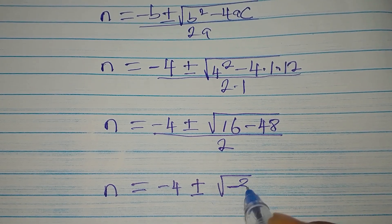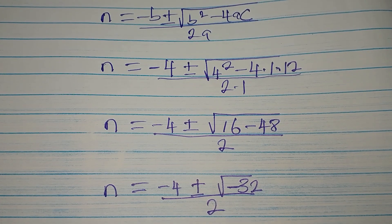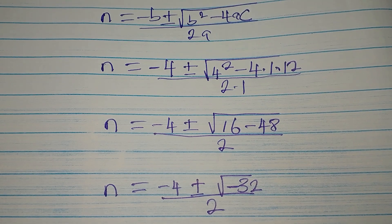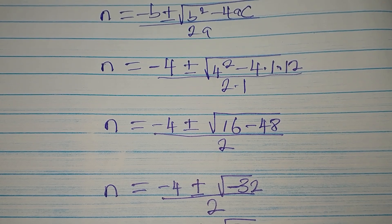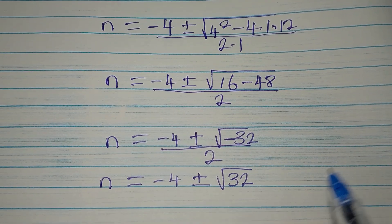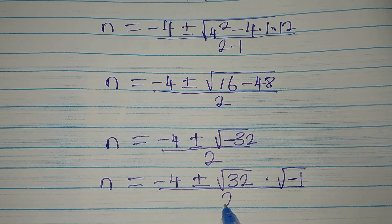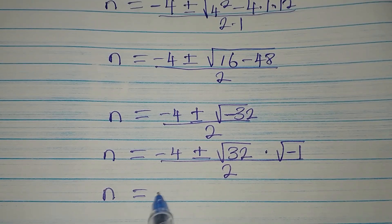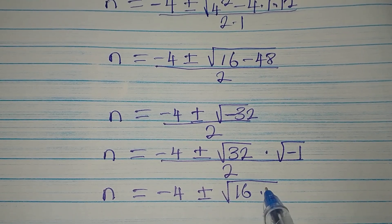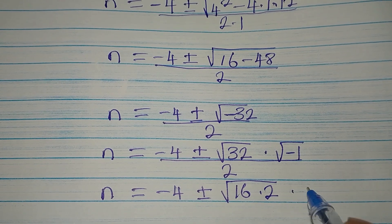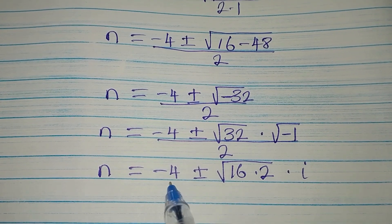Now n will be minus 4 plus or minus square root of minus 32, divided by 2, since 16 minus 48 is minus 32. We have a negative under the square root, so we multiply by negative 1 and introduce i. We can write 32 as 16 times 2, so the square root of negative 32 becomes 4i root 2.